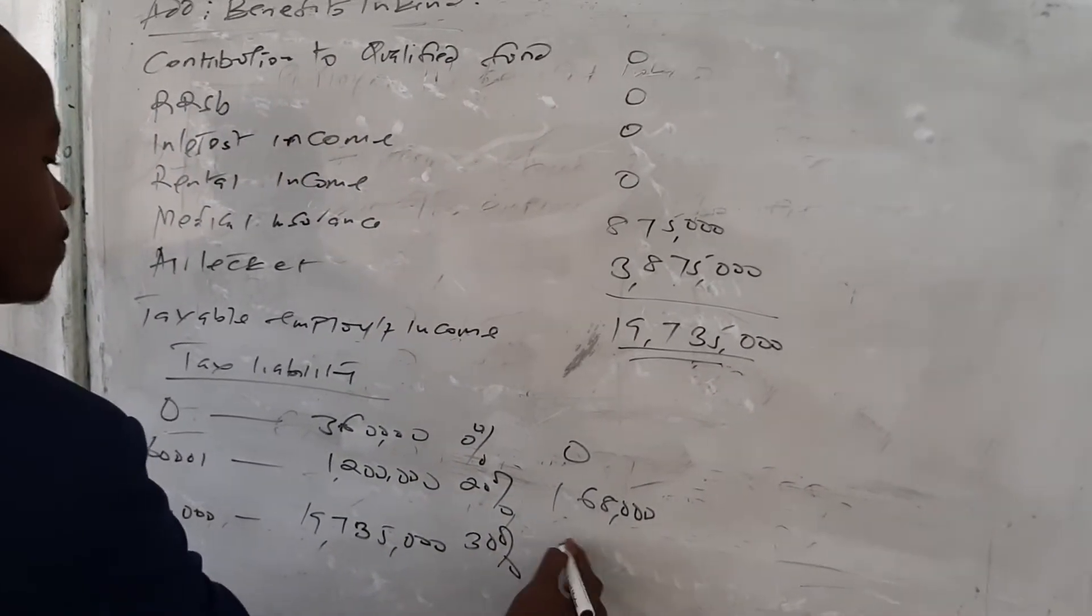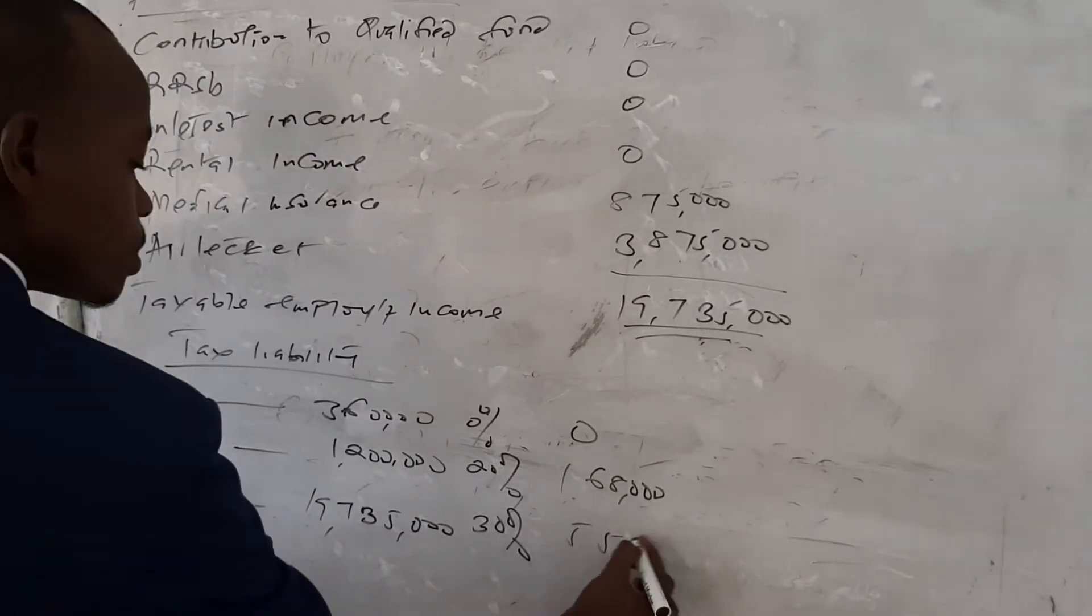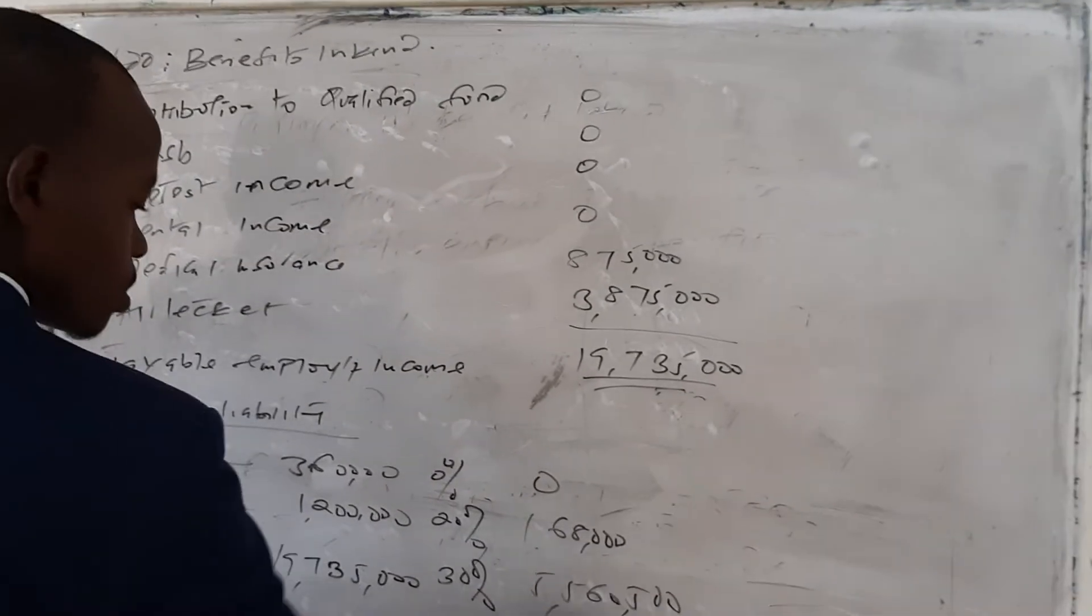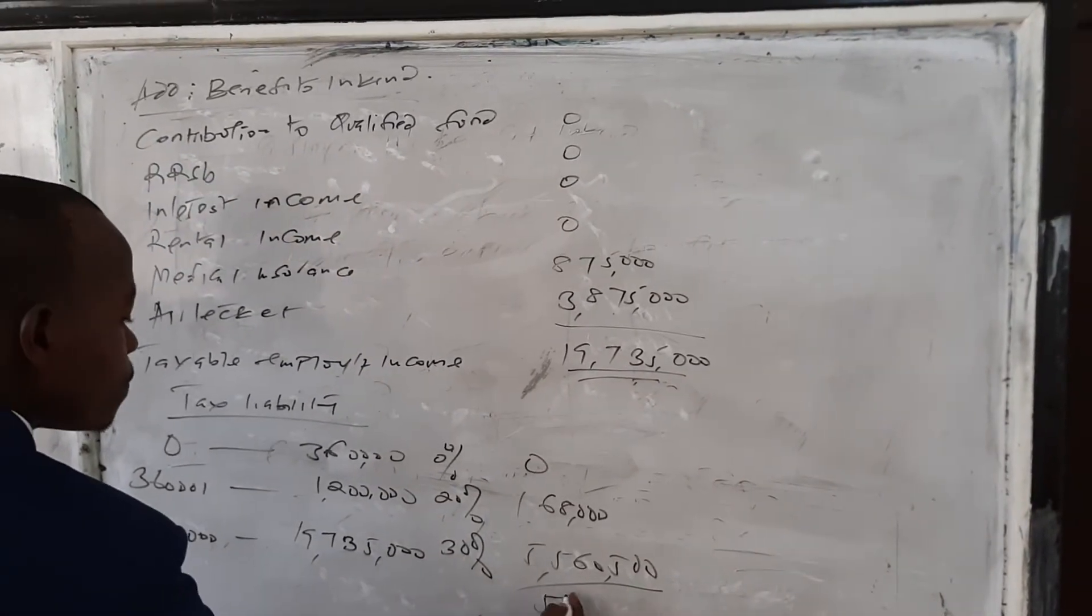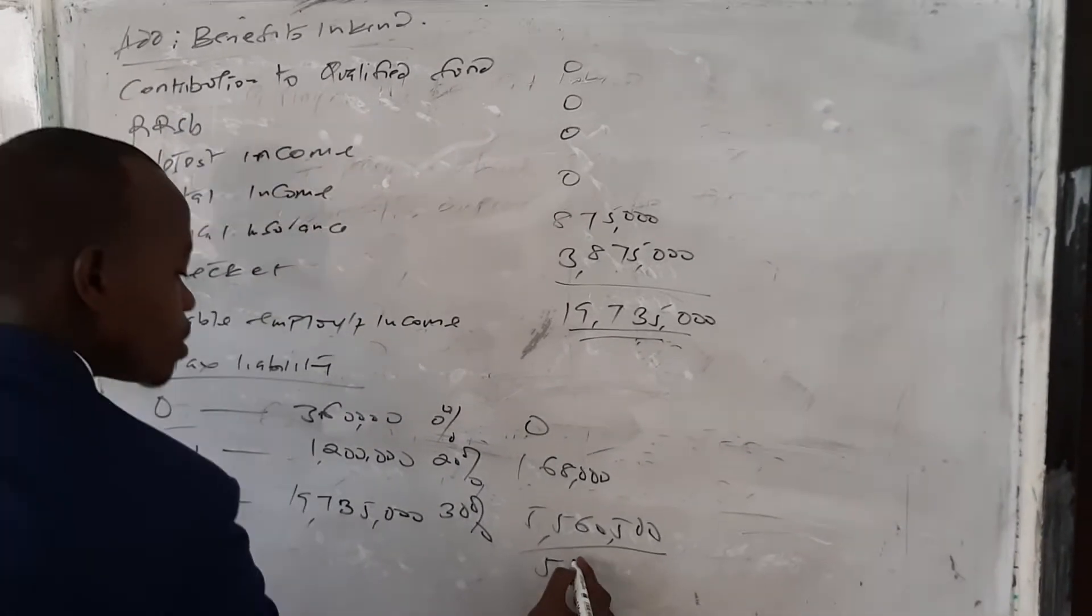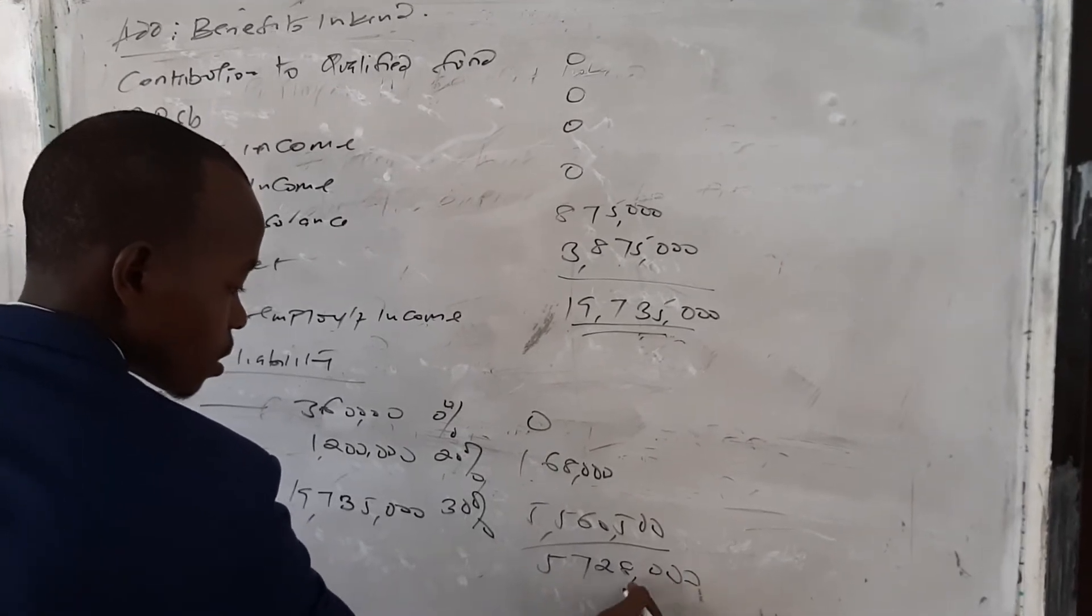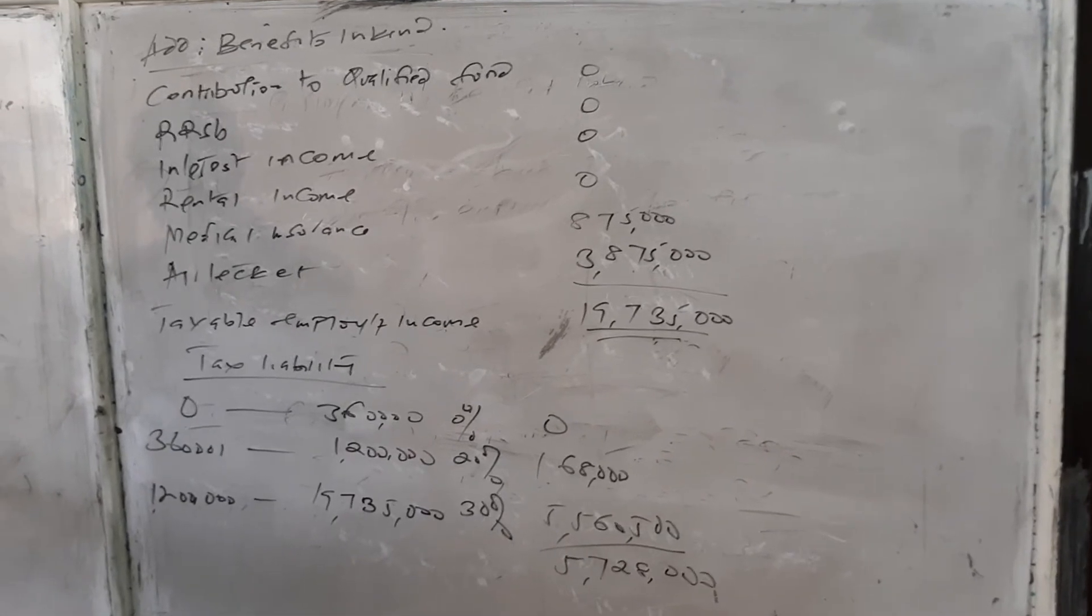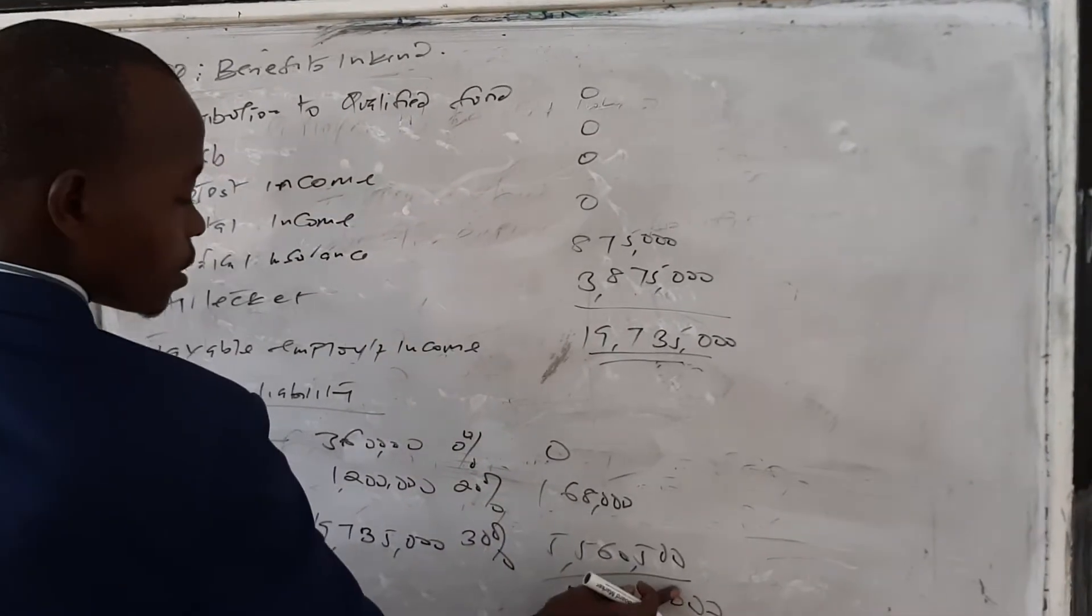5 million, 565,000. So this gives me the total of 5,728,500.